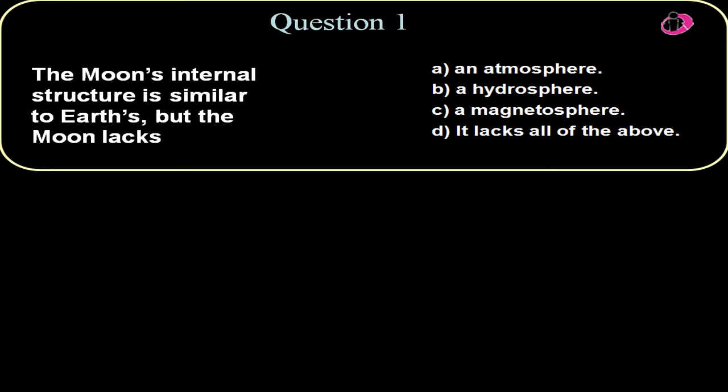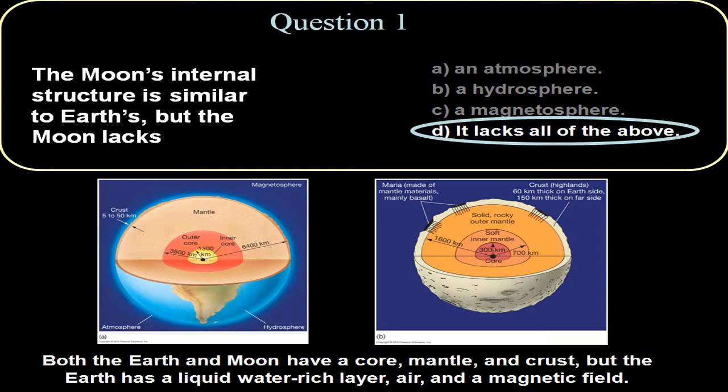It doesn't have a hydrosphere. It doesn't have a water layer like the Earth does. Very few places do. It doesn't have a magnetosphere. It doesn't have a magnetic field to protect itself, so it lacks all of the above. And that's one reason why the Earth is more habitable than the Moon.